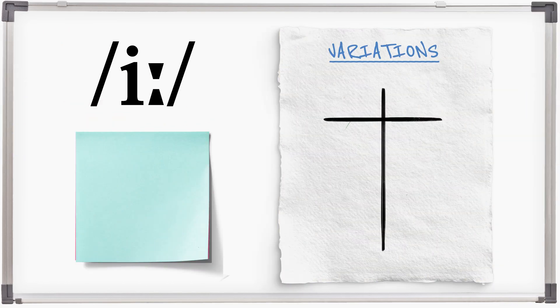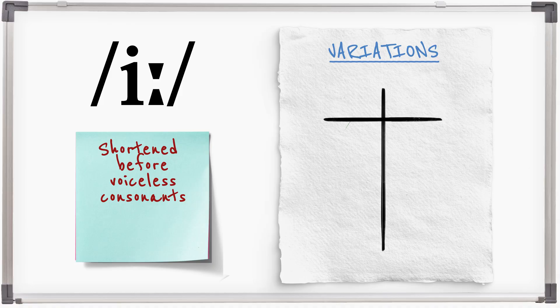E is categorised as a long vowel sound but it is often shortened to the length of a short vowel. This occurs before voiceless consonant sounds.